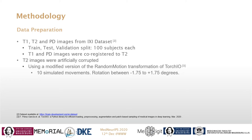The T2 weighted images were then artificially corrupted to simulate motion using a modified version of the random motion transformation of TorchIO, with a rotation between negative and positive 1.75 degrees.